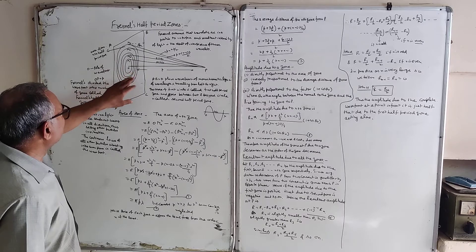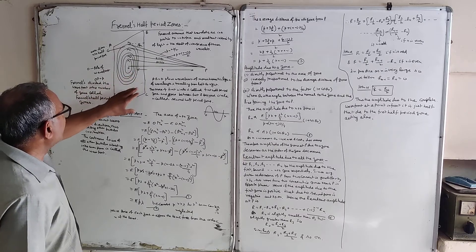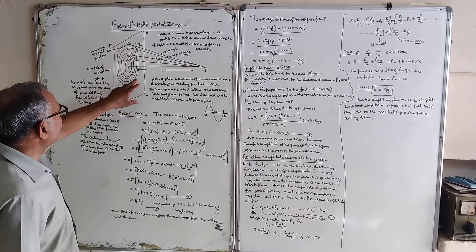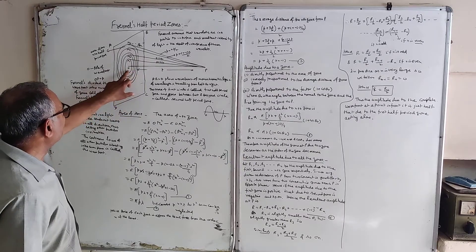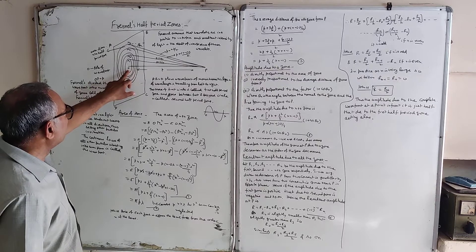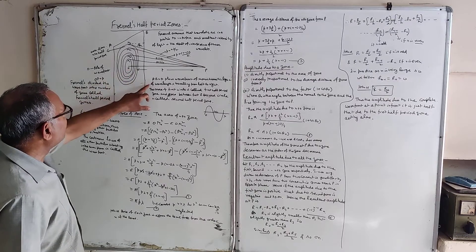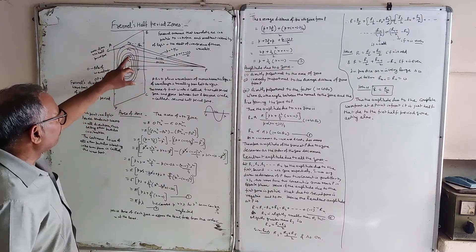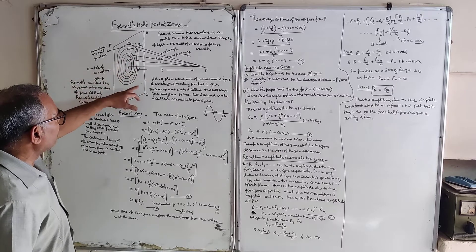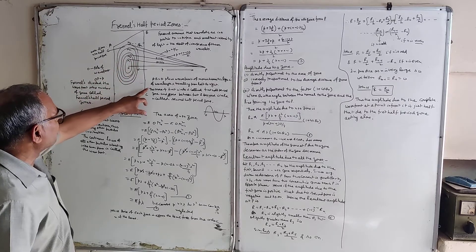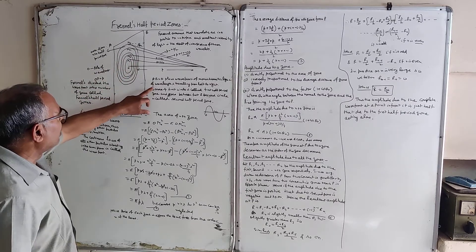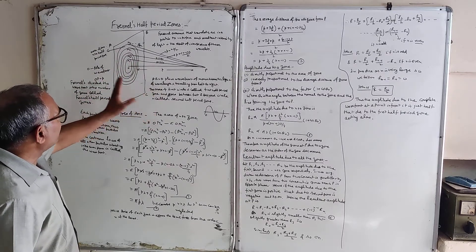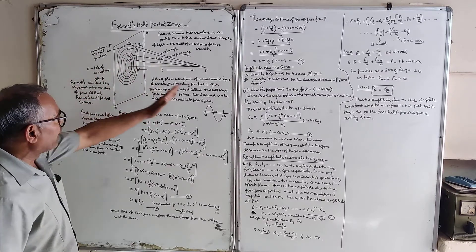We have a wavefront with a pole. Consider ABCD as a plane wavefront of monochromatic light of wavelength lambda, traveling from left to right.